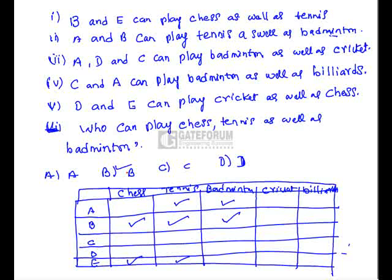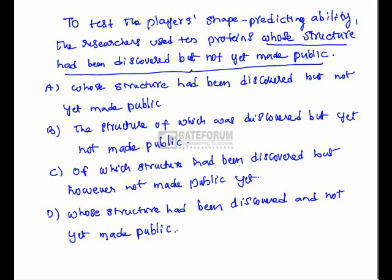Sentence correction. To test the players' shape-predicting ability, the researchers used 10 proteins whose structure had been discovered but not yet made public. In the underlined portion, is there an error or not? We have to check. If you observe very carefully, the sentence contains two past events: one is the structure was discovered, second thing is it was not made public. Therefore we require one past perfect, that means 'had' is required, followed by one simple past.